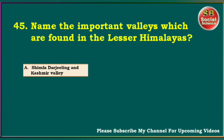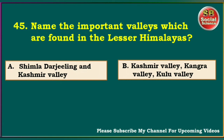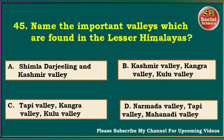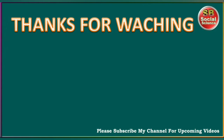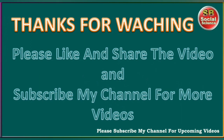Name the important valleys found in the Lesser Himalayas. Shimla, Darjeeling and Kashmir Valley; Kashmir Valley, Kangra Valley, Kulu Valley; Tapti Valley, Kangra Valley, Kulu Valley; Narmada Valley, Tapti Valley, Mahanadi Valley. The answer is Kashmir Valley, Kangra Valley and Kulu Valley. OK students, practice all 45 questions. These are very important and we will continue our class with a new topic. Till then, take care.